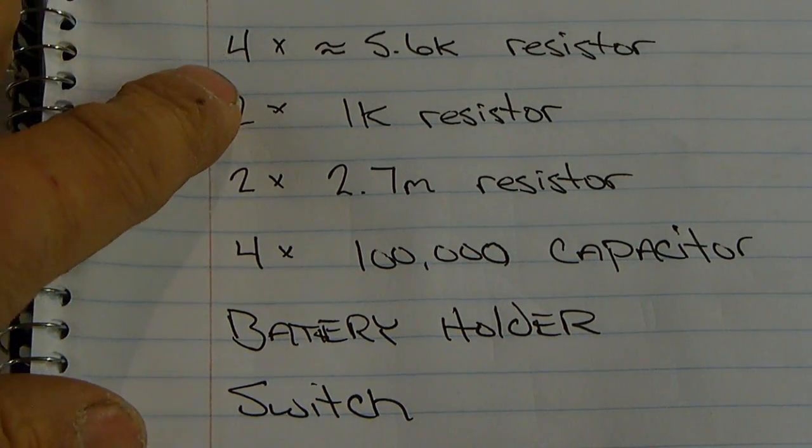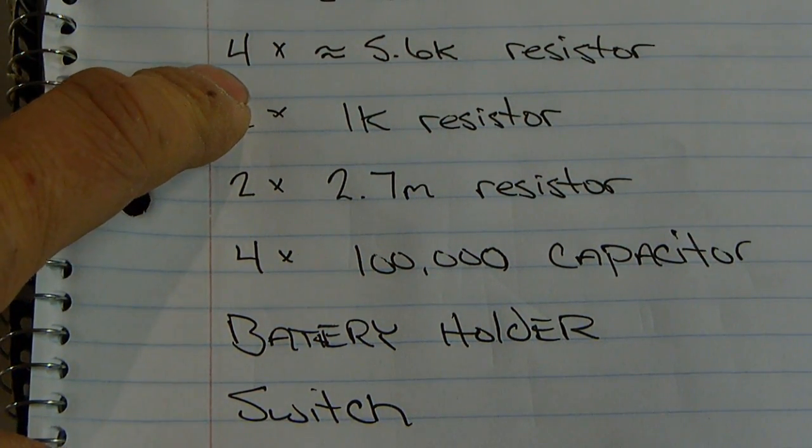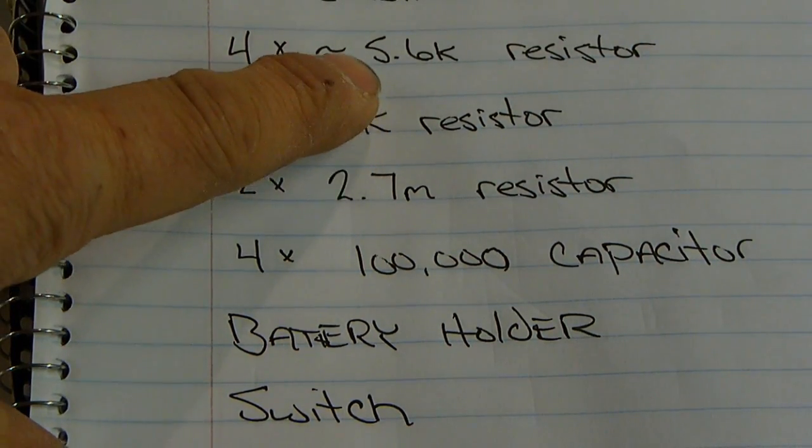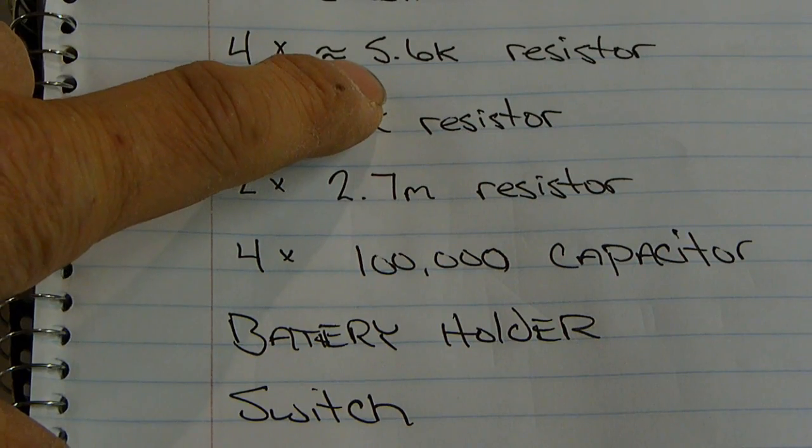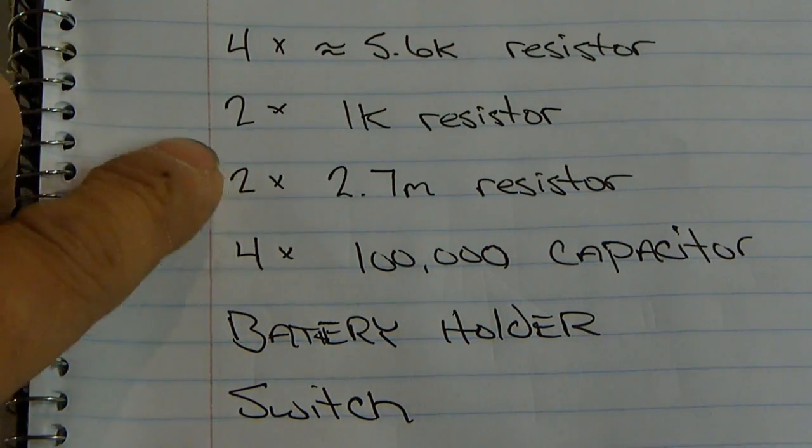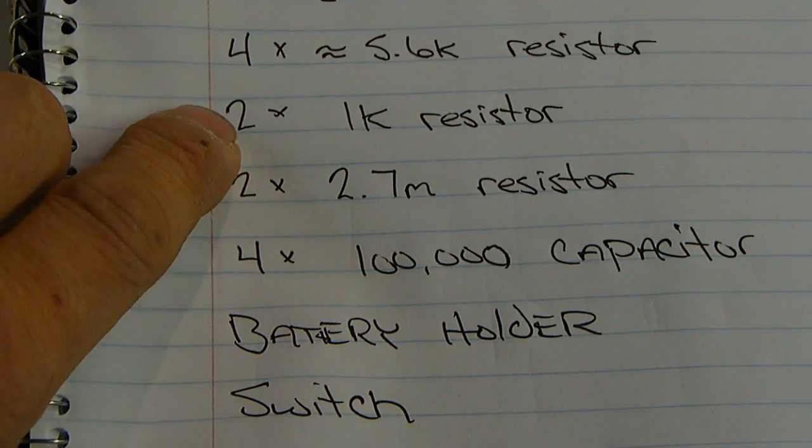Additionally, I'm going to have four approximately 5.6K resistors. This isn't important as long as it's close to 5K, and they're all the same. That's what matters. Two 1K resistors, again, not important as long as they're real close to 1K.